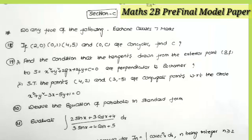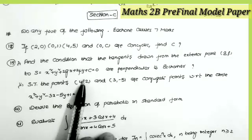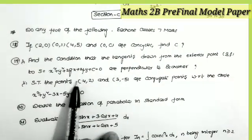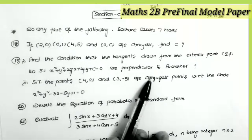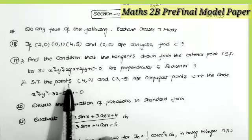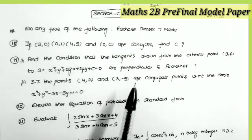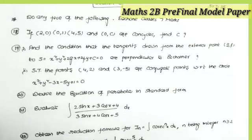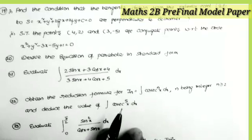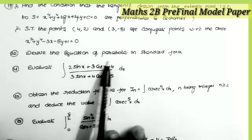Question 19: find the condition that the tangents drawn from an exterior point (p, q) to the circle S = x² + y² + 2gx + 2fy + c = 0 are perpendicular to each other. Also in question 19: show that the points (4, 2) and (3, −5) are conjugate points with respect to the circle x² + y² − 3x − 5y + 1 = 0.